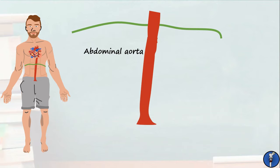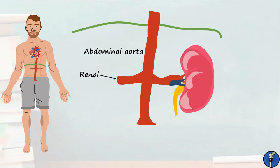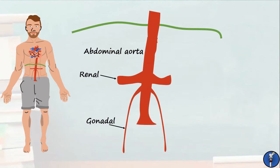As the aorta passes through the abdomen, it produces several branches that come out laterally and anteriorly. The lateral branches we're concerned about here are the renal arteries, which supply the kidneys, and the gonadal arteries, which supply the ovaries or testes. There are also a number of lumbar arteries, which are similar to the posterior intercostals, but we won't cover these in any more detail.